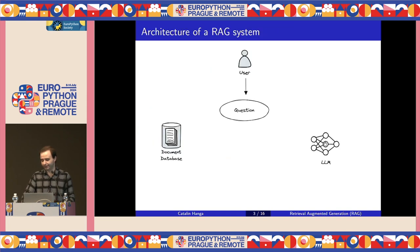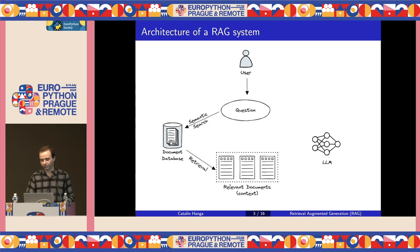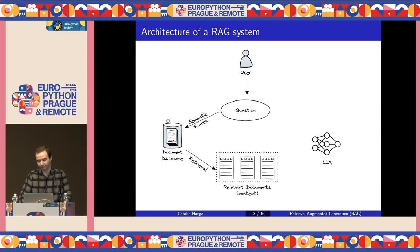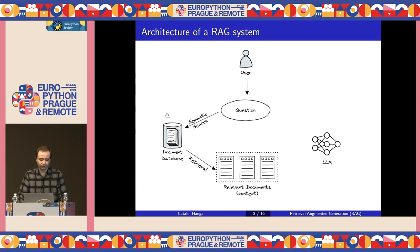Let's say we have a language model and a database with documents which are either private or very recent, so these documents were not used during the training of the LLM and it's not possible to directly ask the model any questions about their content. The first step in the RAG process is to query the database using a type of algorithm called semantic search. This will look for fragments of text which are semantically similar to the user question and return the top results.